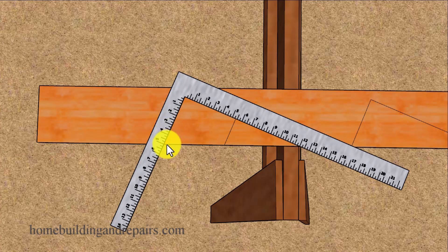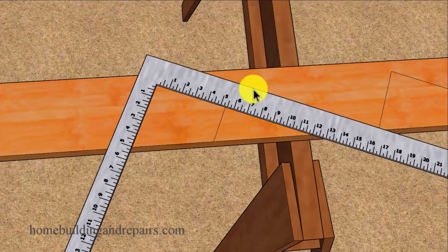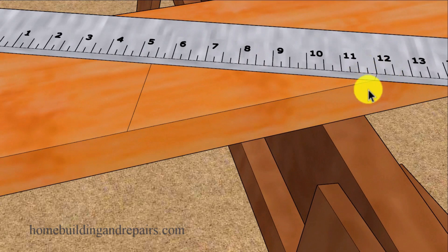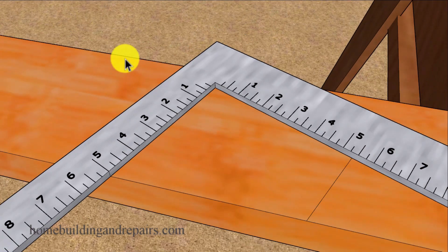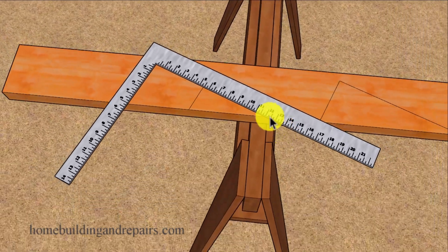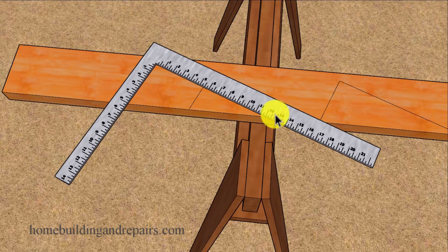We will be lining up the 5 for our 5 and 12 along with the 12. That would look something like this if we line up the 12 here with the edge and then the 5 over here with the edge. If you're dealing with a 4 and 12 roof pitch then you would be lining up the number 4 there on that side, but still using the number 12 on this side.